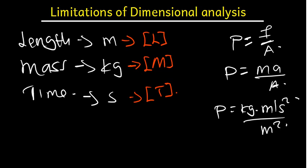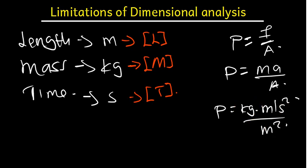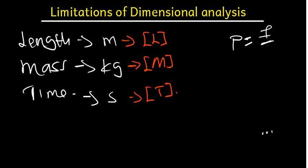So now I can see that I have kilograms, I have meters, I have time. The meter there is the length. Basically, that is the first limitation — dimensional analysis is only applicable to length, mass, and time.